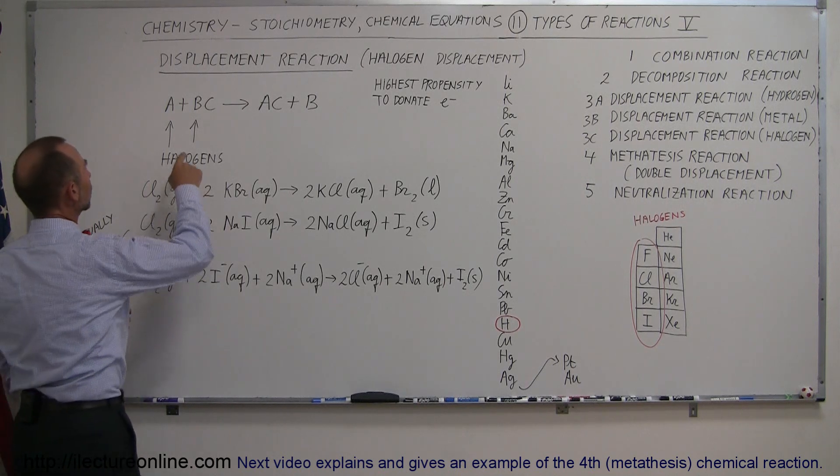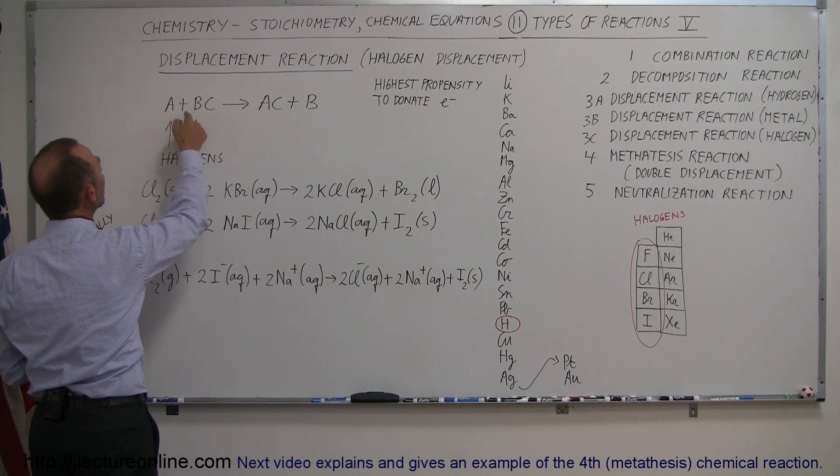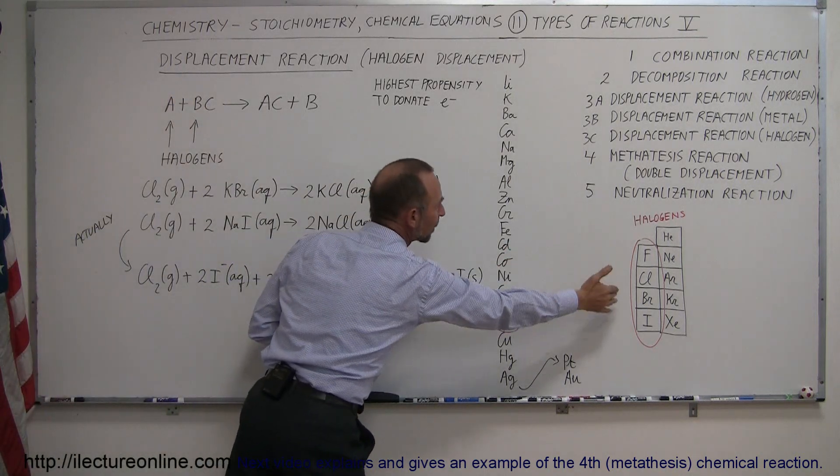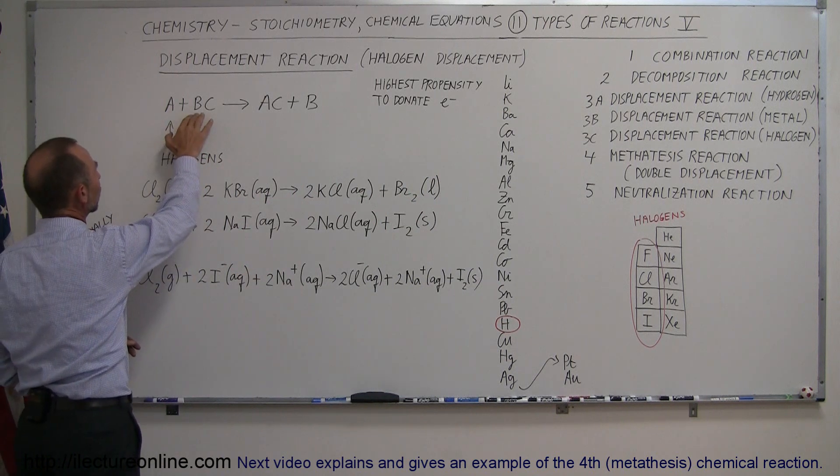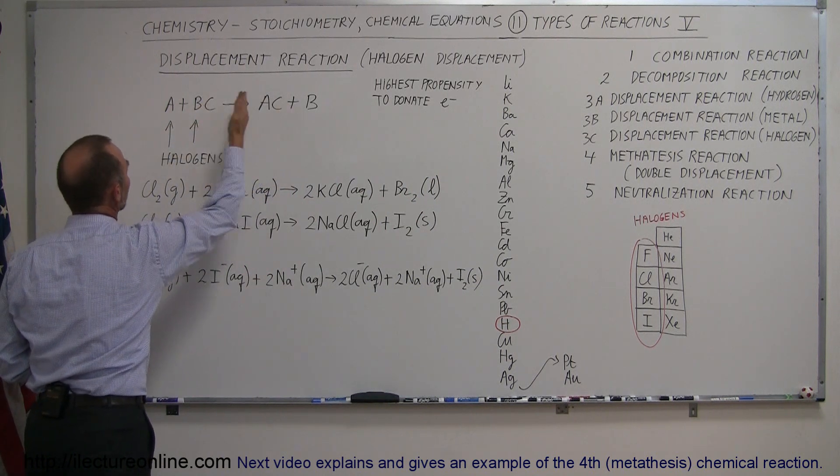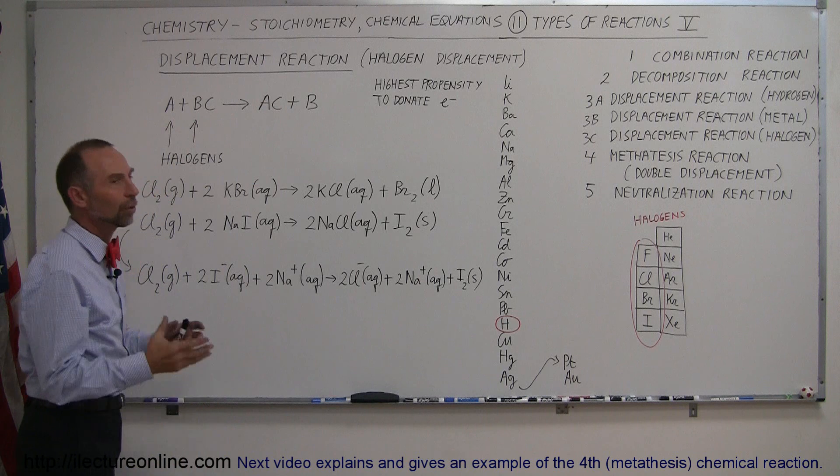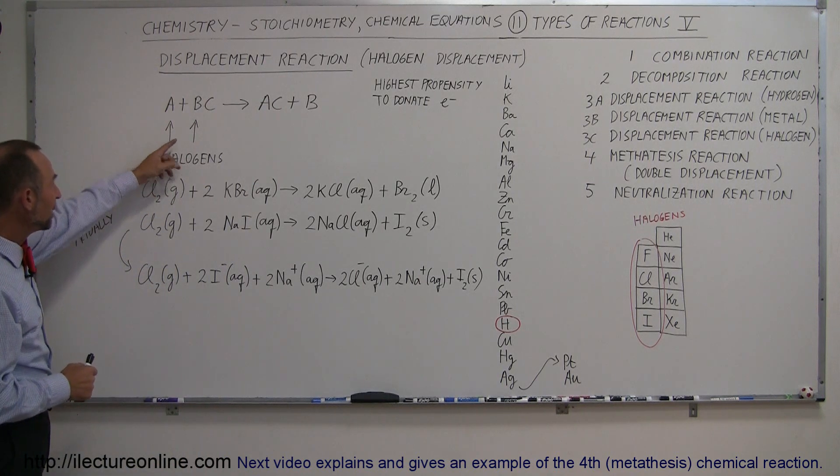Electrons will be given from A to B because they're higher up on the periodic table and more likely to donate electrons. So A will donate electrons to B, B will come out as a precipitate, and A will join up with C or stay in the aqueous solution as an ion. Both A and B are halogens.